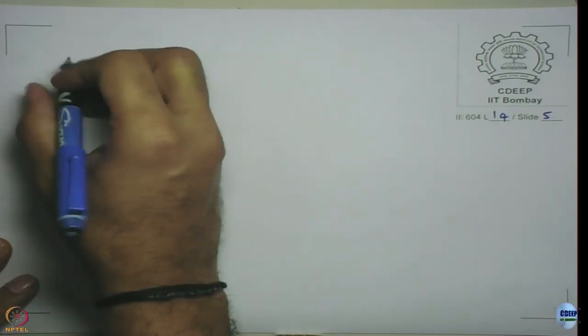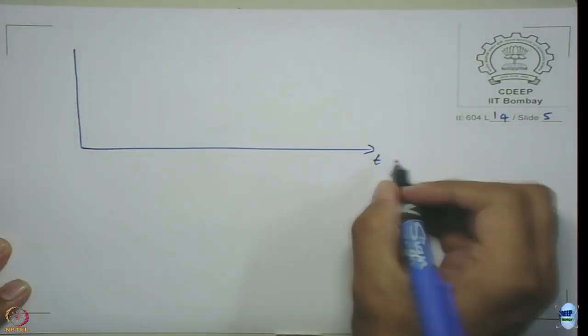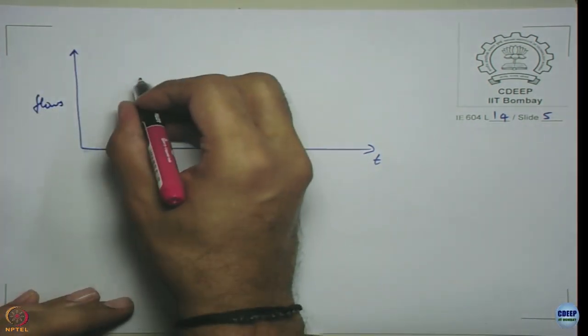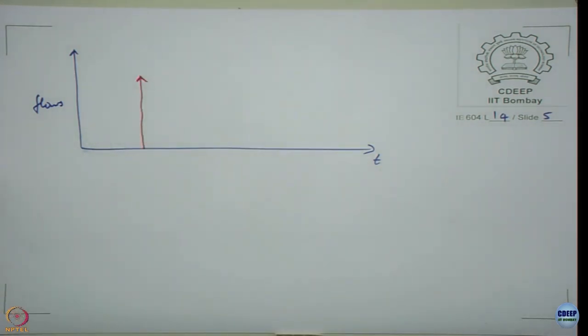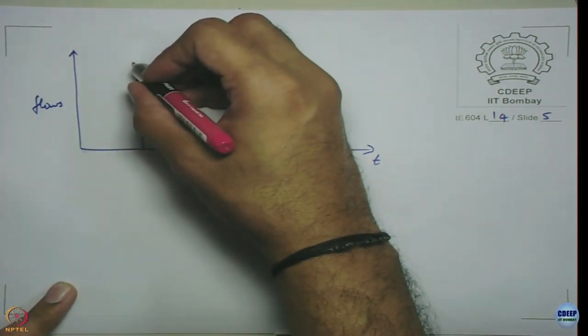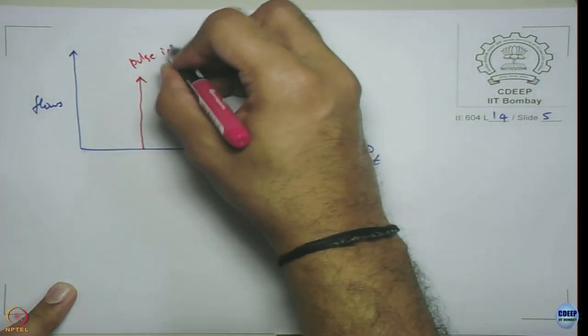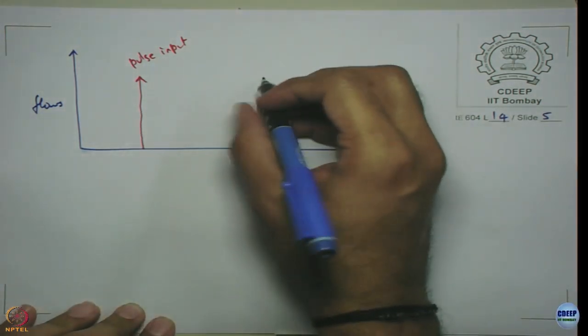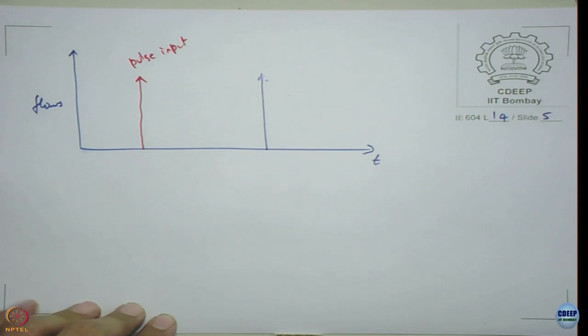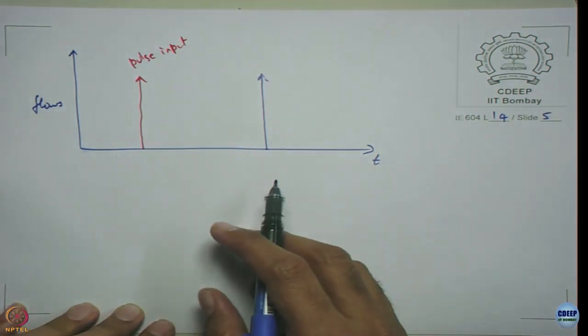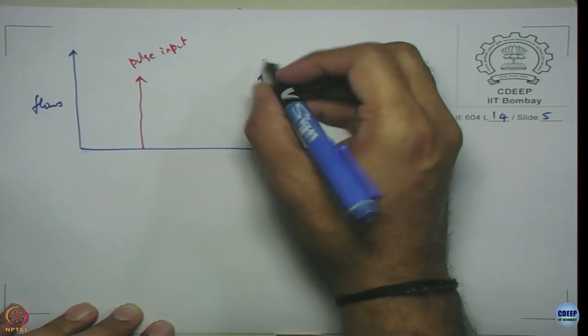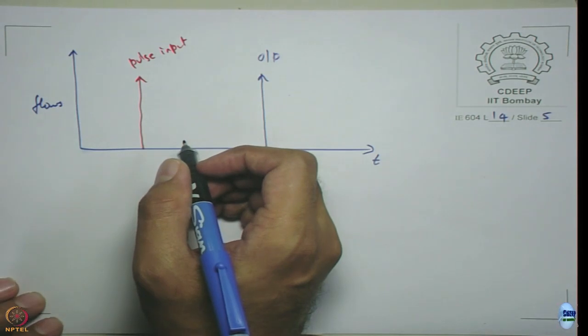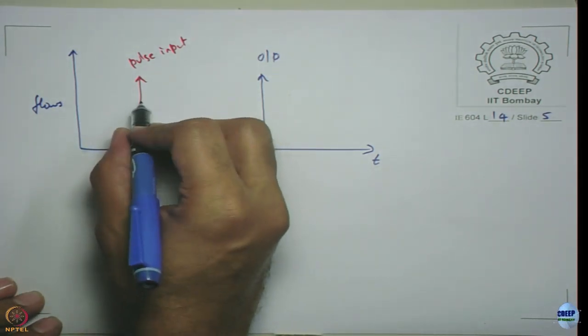As we move into higher order delays it is nothing but a sum of exponential distributions, it is the kind of ideas what we will be exploring. First order and pipeline delays: this is T and this is your flows. Suppose this is your pulse input. A pipeline delay will give me this kind of output if it is a pipeline delay. This is your output curve. This is pipeline delay.